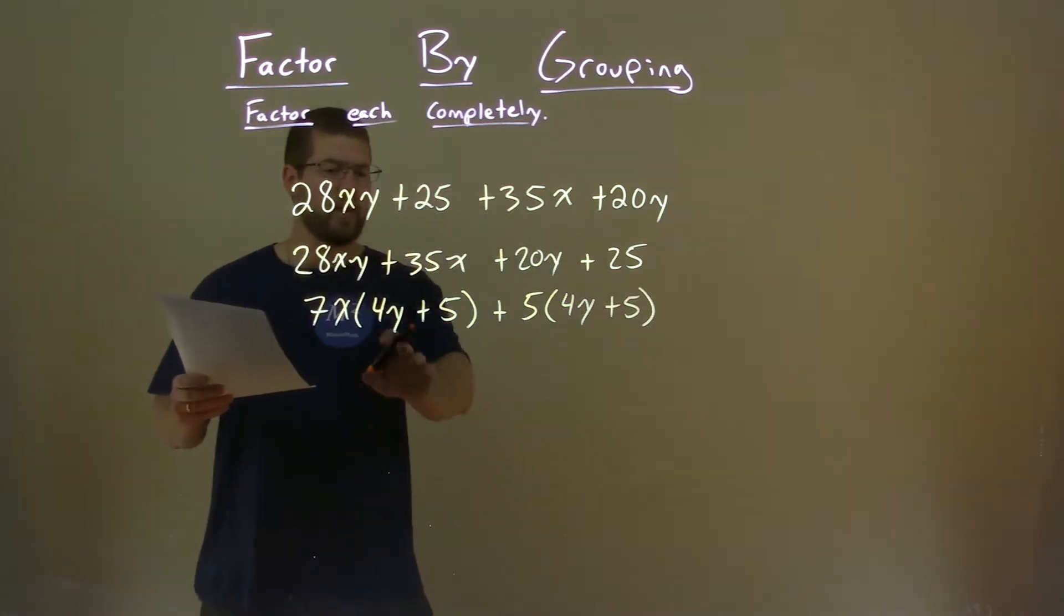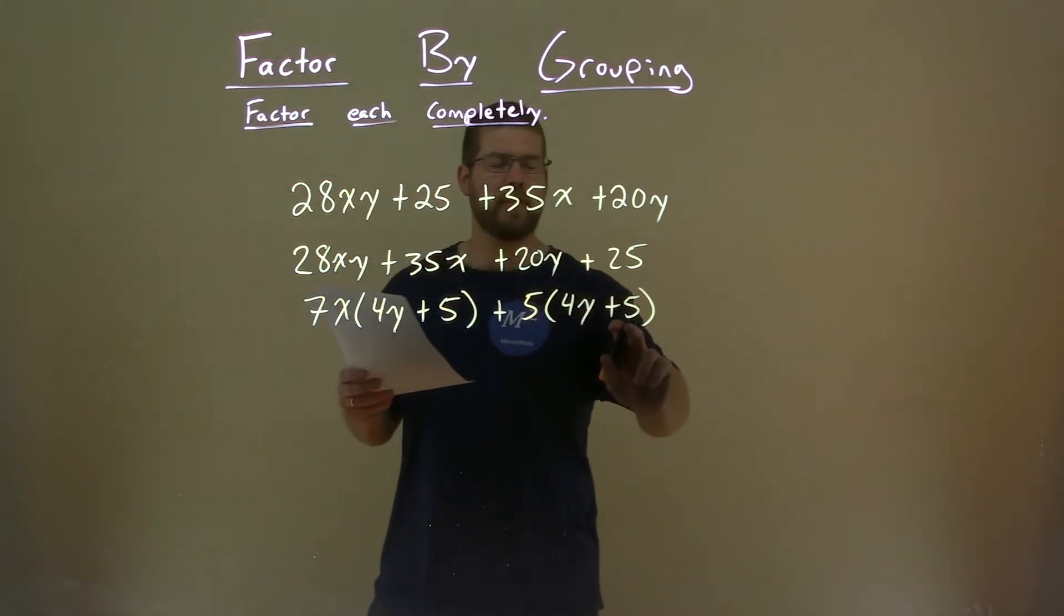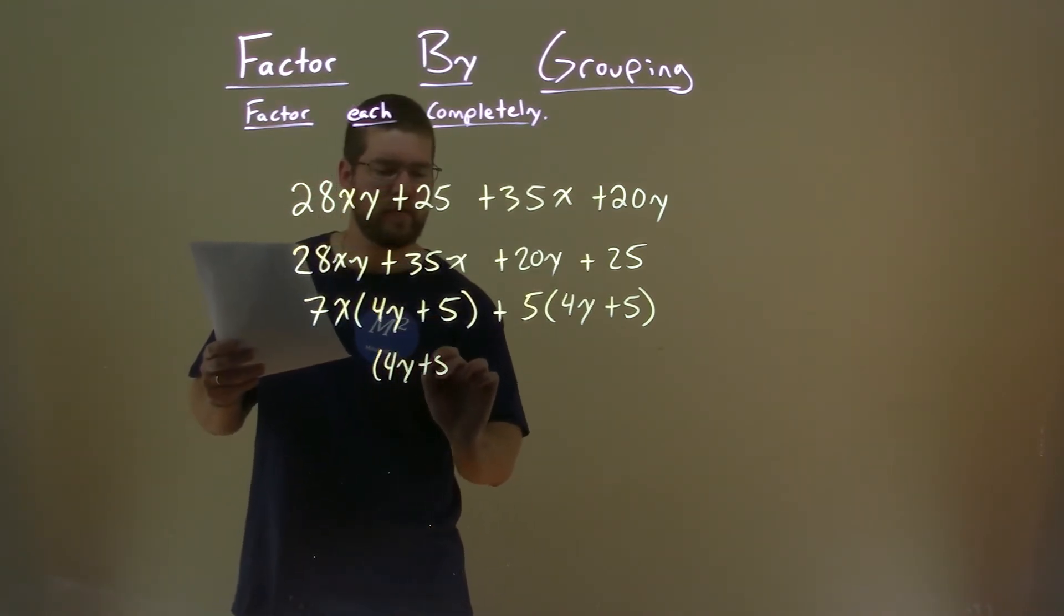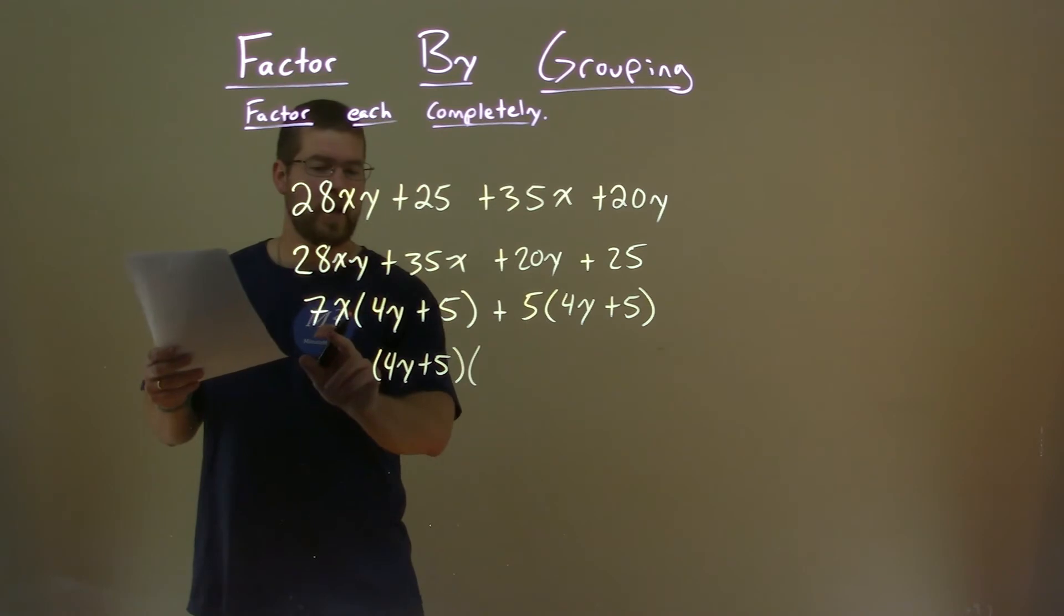So, where do we go from there? Well, we have 4y plus 5 and 4y plus 5 both here and both parts. If we pull out a 4y plus 5 from both parts, we're left with then, well, a 7x comes down and a plus 5.